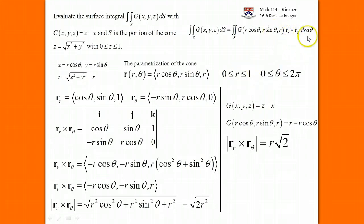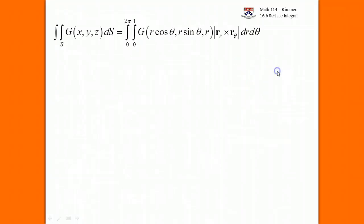Simple because the region that we're integrating over, the r and theta, have numerical bounds. So r goes from 0 to 1, theta goes from 0 to 2π. We plug in that G function, which is r minus r cosine theta. We plug in the magnitude, which is r root 2. And then we get dr dθ.